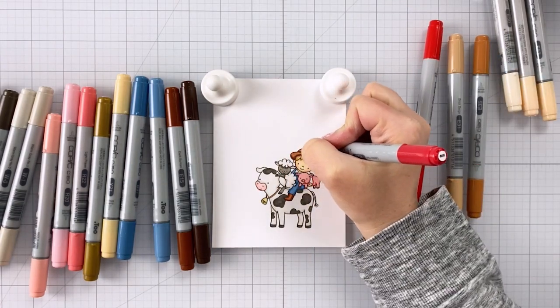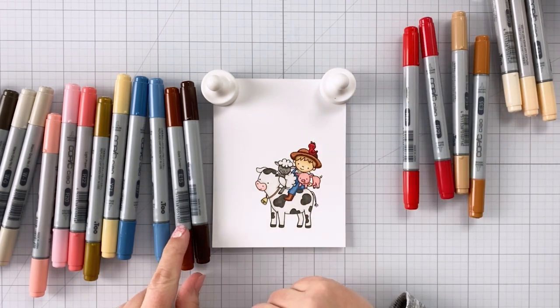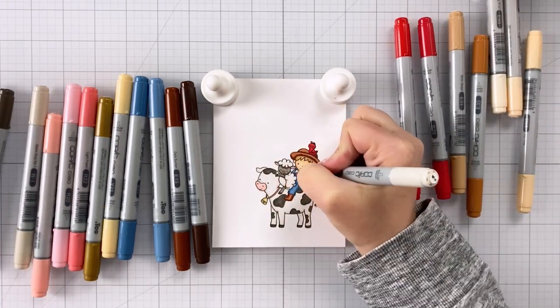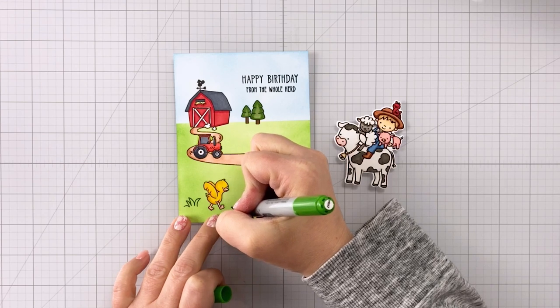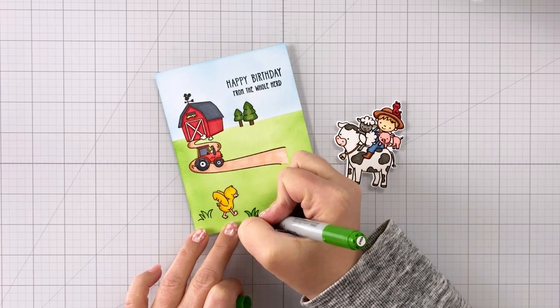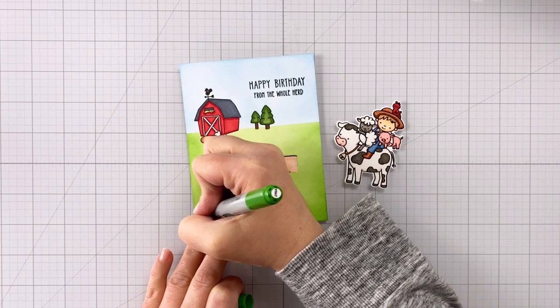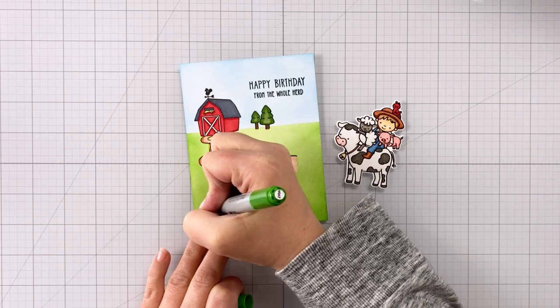Once I get the farmer done, I can come in here and color the little bird. I'm using R27 and R29. Those are the same colors that I used on the barn. So that kind of ties those together. And then E53 for the beak. Once I was all done, I decided that I wanted those little grass spots at the bottom to stand out some more. And so I'm coming in here with some YG17 to make those a little bit darker.